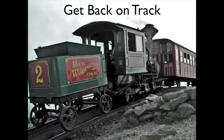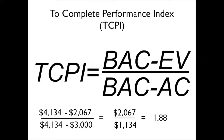One of the things we can do is try to figure out what our performance has to be in order to get things back on track. That's where one more performance index comes into play — the To Complete Performance Index, or TCPI. This basically says if we're going to try to meet our original budget, what does our cost performance index have to be going forward? When we do the calculations, we find that our TCPI is 1.88.